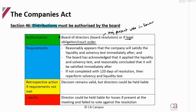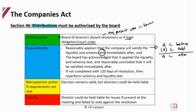To apply the liquidity and solvency test, you take assets and liabilities before the distribution, add the reduction of assets and increase in liabilities, then assess the 'after' position to confirm that total assets exceed total liabilities and current assets exceed current liabilities for liquidity. The board must acknowledge they have applied this test.